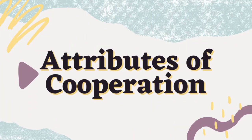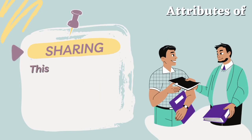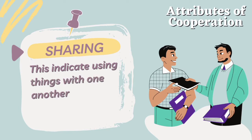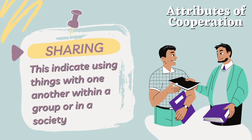Let's see the attributes of cooperation. Number one attribute of cooperation is sharing. As we said in the definition, it's a process of working together. When people come together, they need to share things. Sharing indicates using things with one another within a group or in a society.